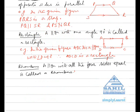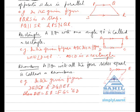Rhombus. A parallelogram with all four sides equal is called a rhombus. For example, in the given figure DE is parallel to GF and DG is parallel to EF, so we can call it a parallelogram. But since all four sides are also equal, it becomes a rhombus.